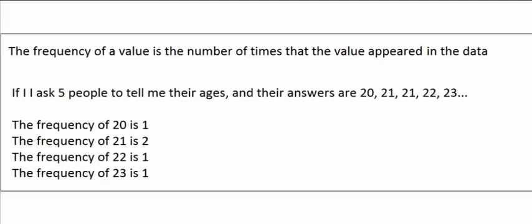Here's one example of frequencies. Imagine that I ask five people to tell me their ages, and their answers are 20, 21, 21, 22, 23. If this is my data set, then the frequency of 20 is 1 because 20 only showed up one time. The frequency of 21 is 2, because 21 showed up 2 times. The frequency of 22 was 1, and the frequency of 23 is also 1. So the frequency of a value is just the count of the number of times that that value appeared in the data set.